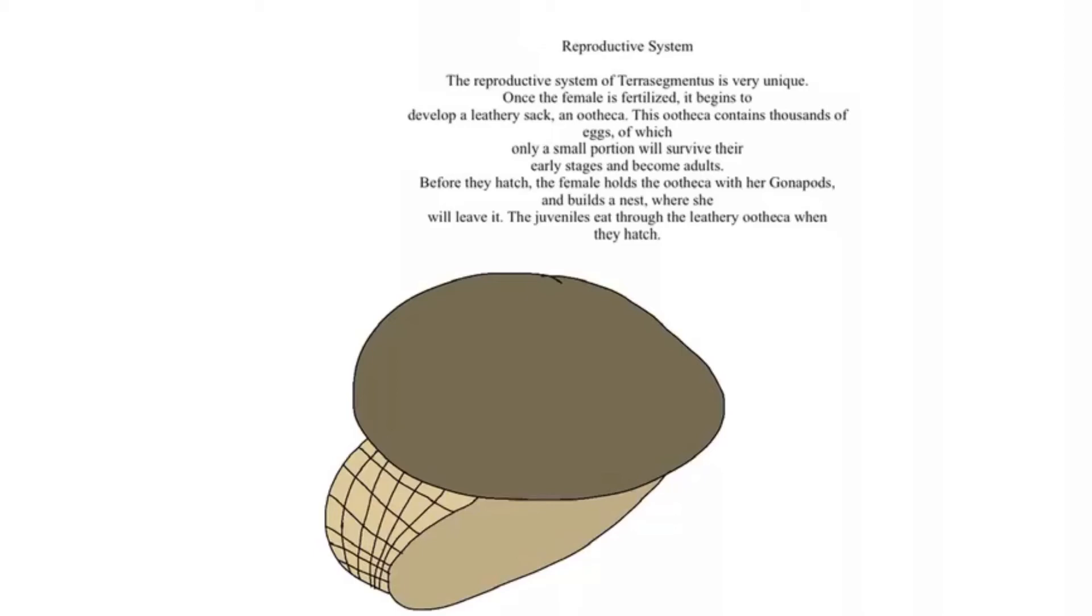Females of multisegmentis lay multiple eggs in a single batch, and this might be adapted to form an ootheca, a leathery structure with a lot of eggs inside of it.